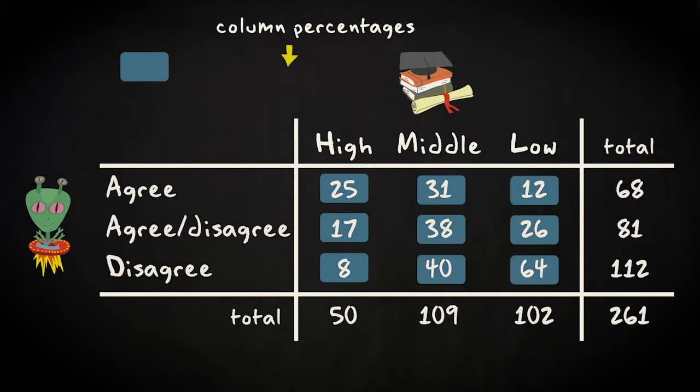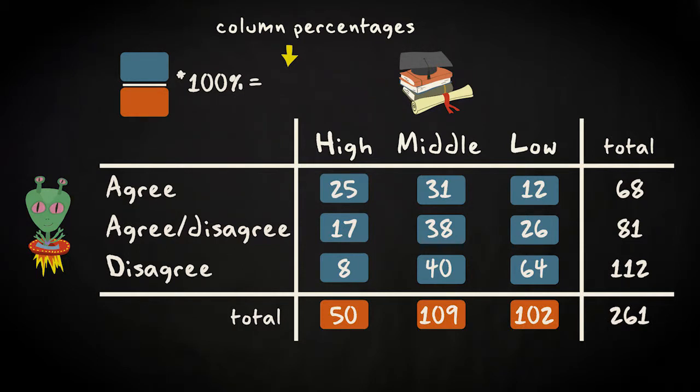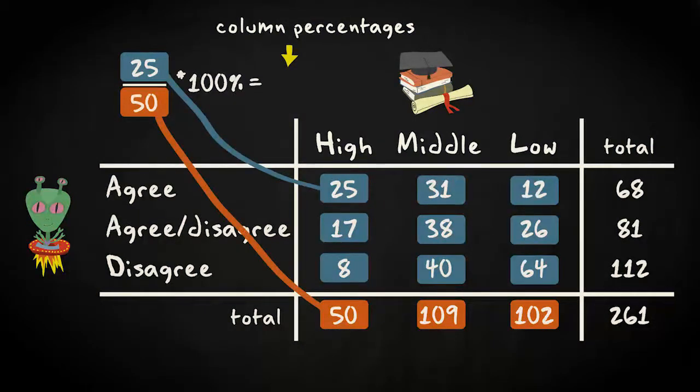For every cell, I compute the percentage of cases in that cell, compared to the total number of cases in the column in which the cell is located. We have 25 cases here. The total number in its column is 50. This means that we get 25 divided by 50 multiplied with 100, that equals 50%.